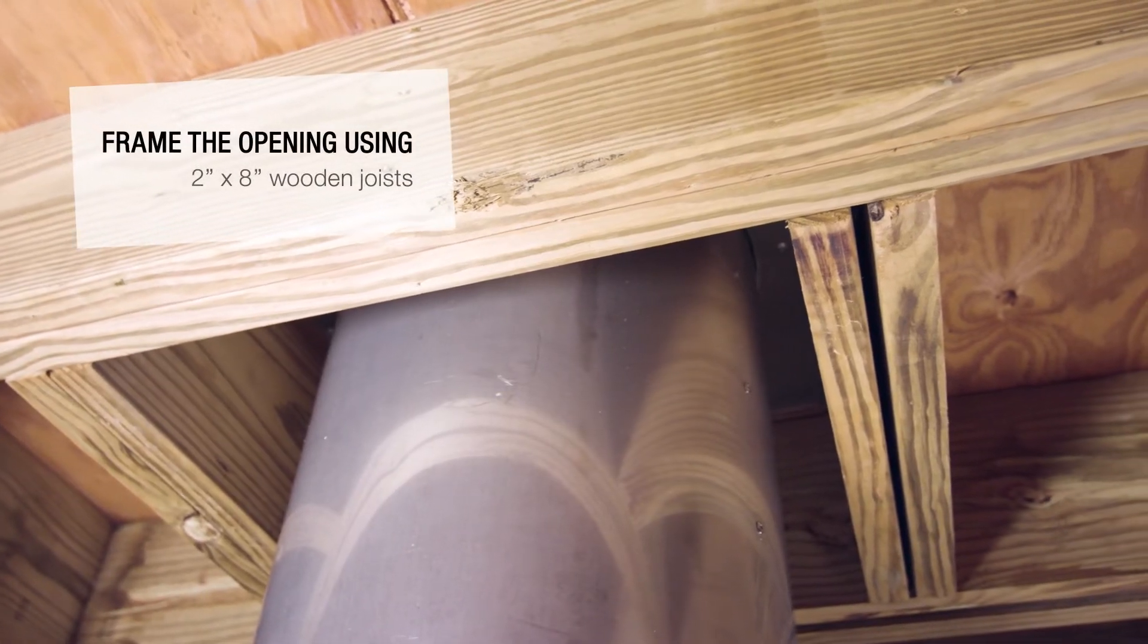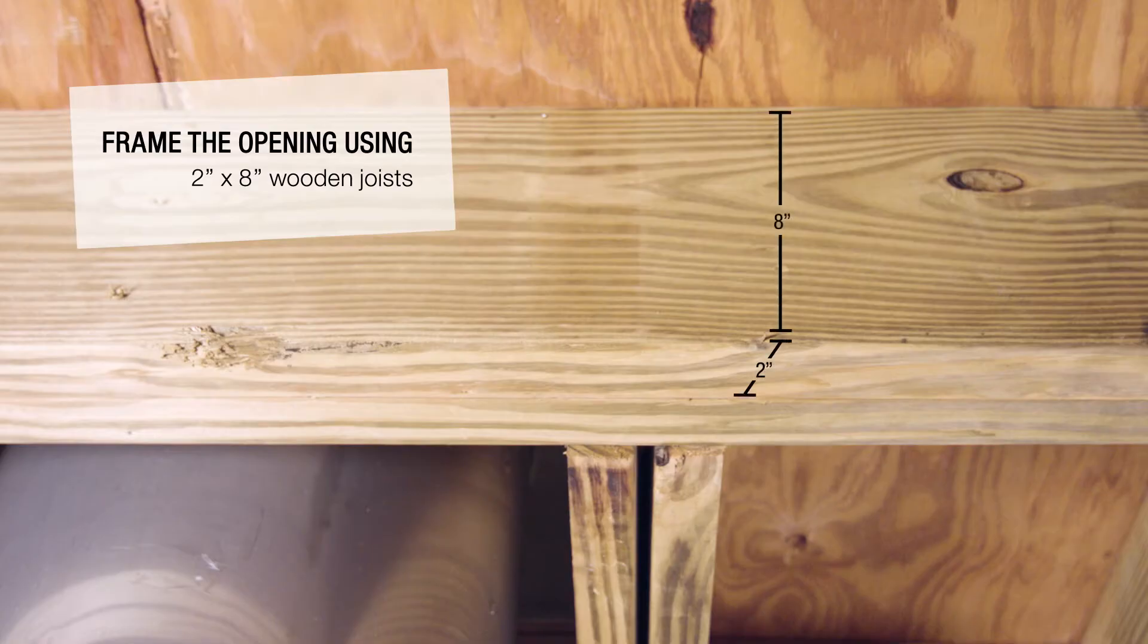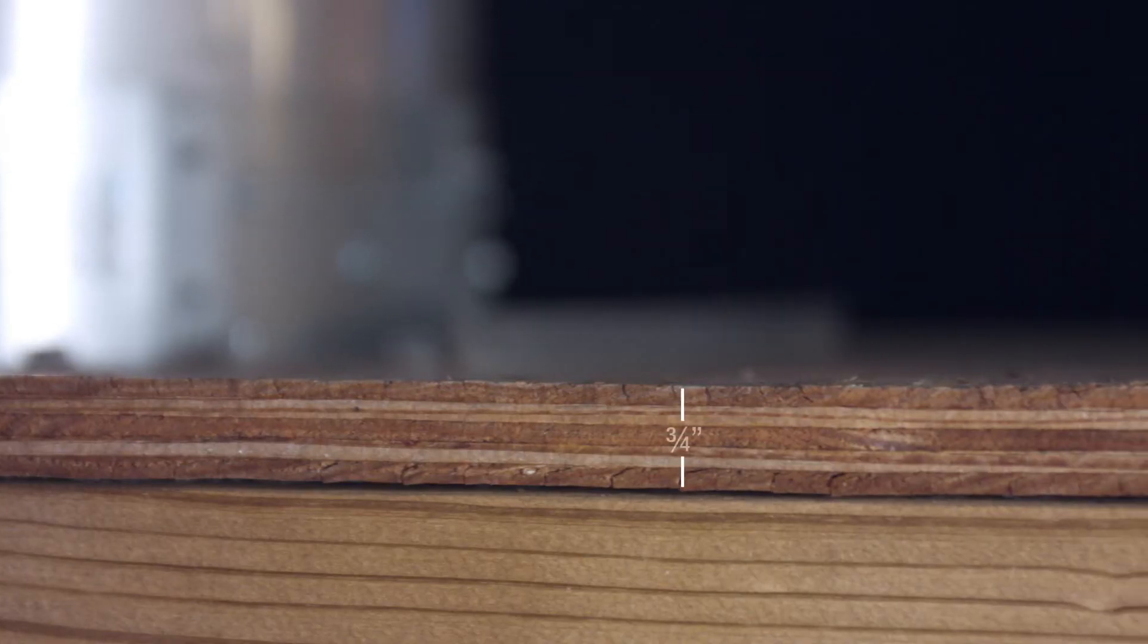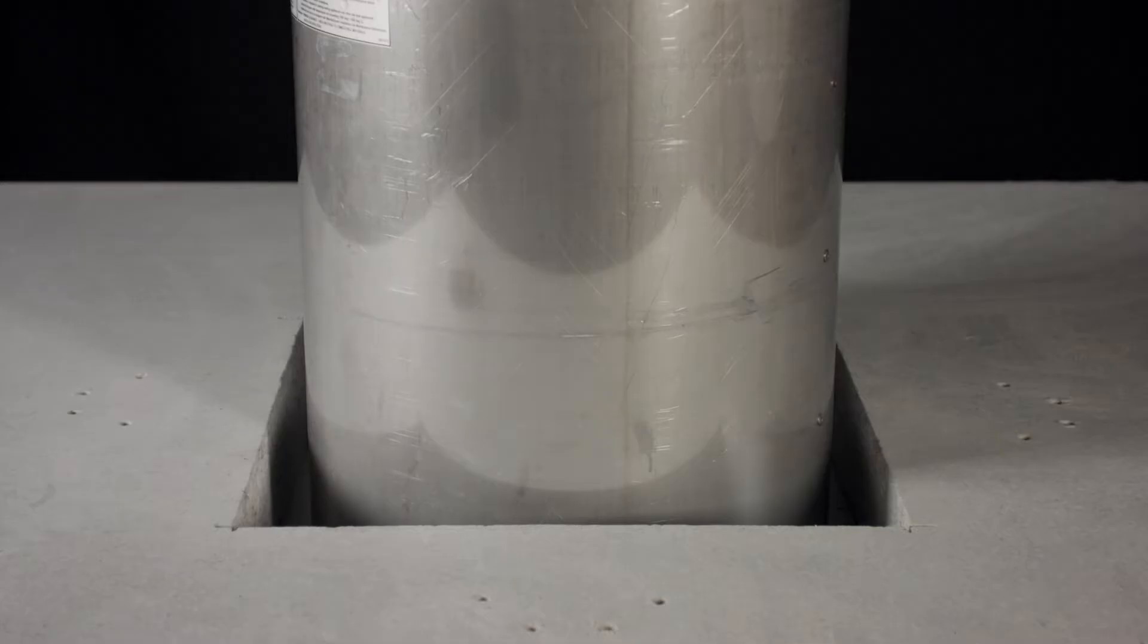The opening must be framed by the general contractor with at least two by eight inch wooden joists covered with three-quarter inch plywood or concrete floor.